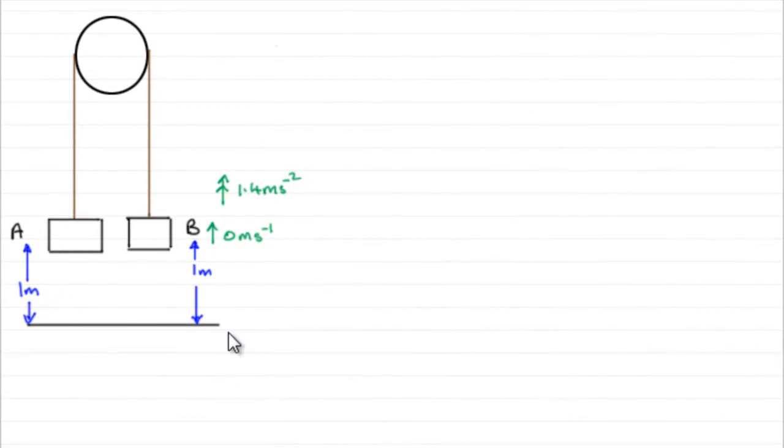Now for this last part, what we need to do is look at particle B's motion. We know that it started at rest and accelerated upwards at 1.4 meters per second per second. We got that from the last part of the question. And after half a second, it's going to be up to a point up here somewhere.